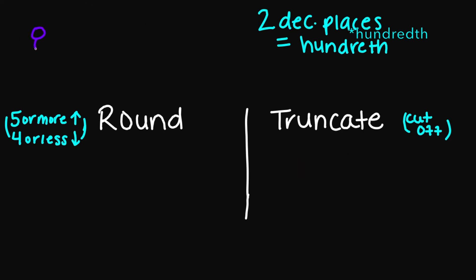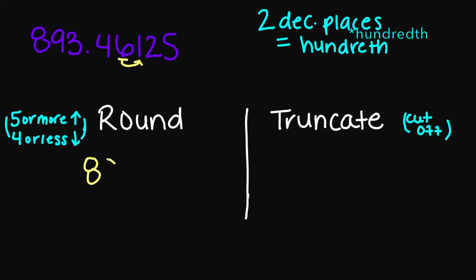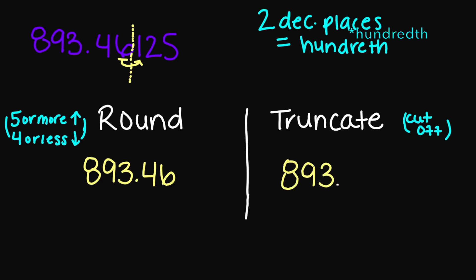What about 893.46125? Two decimal places puts me right at the 6. If I look next door, I see a 1, which is less than 5, so I'm rounding down. Rounding gives 893.46. And if you were to truncate to two decimal places, it would also be 893.46.